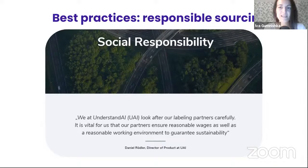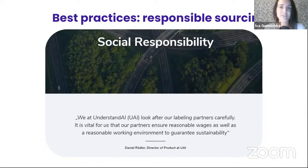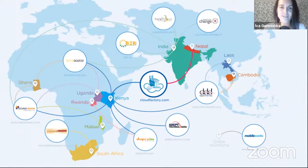There are several best practices we recommend to make sure your data and models are high quality. One of them is social responsibility. One of my favorite examples is a company called Understand AI, which has a statement saying they look after their labeling partners, want to ensure reasonable wages, a reasonable working environment, and guarantee sustainability. Having such a statement — or even thinking about the impact of your AI supply chain and the suppliers you're choosing — is important for any data practitioner. There are a lot of impact sourcing enterprises that provide data set curation, collection services, and human-in-the-loop services.